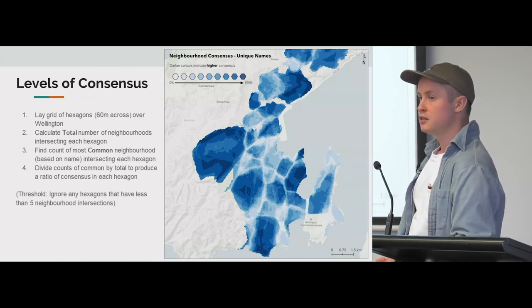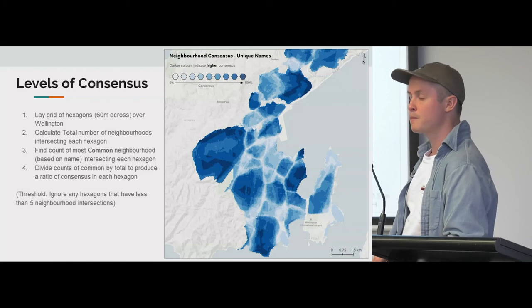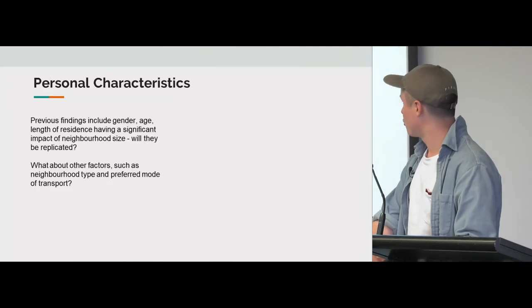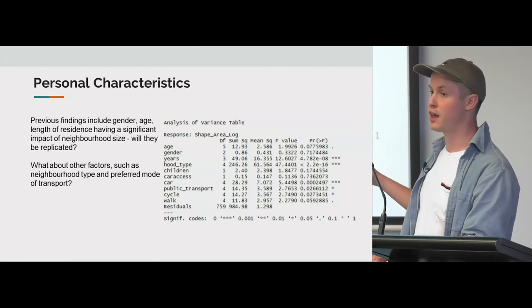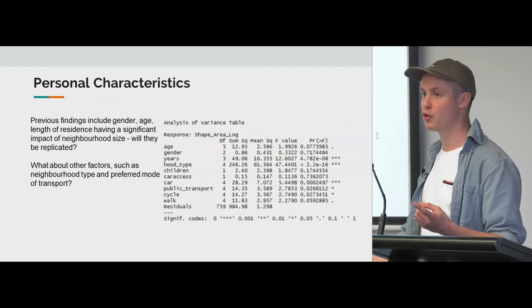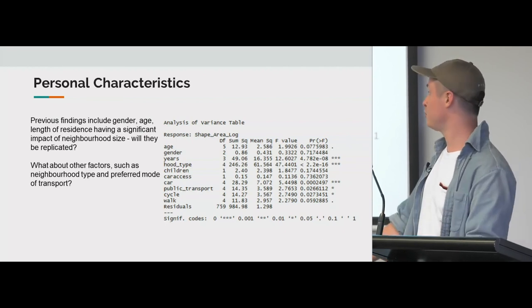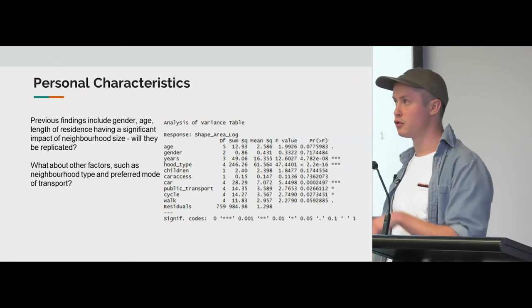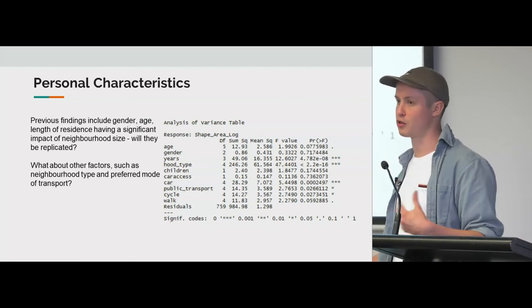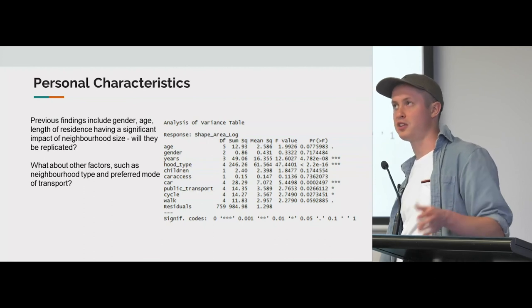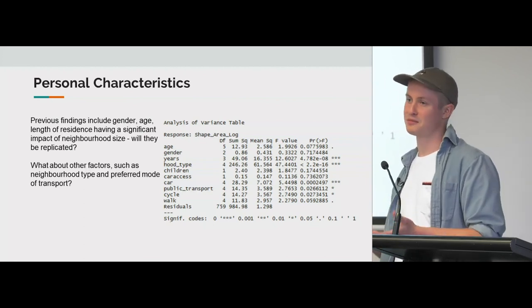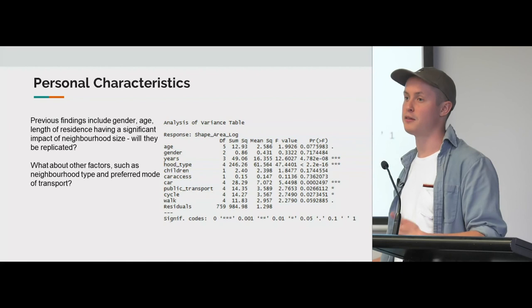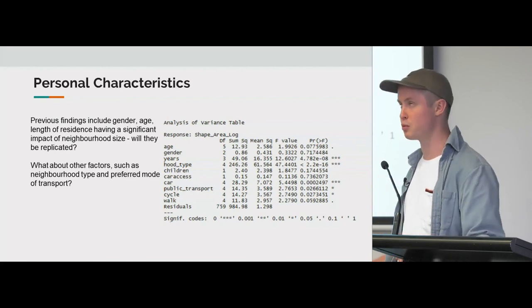Did you look at how many nodes people were placing to work out how much effort they were putting in, whether they were just roughly sketching it out? I've performed analysis on number of vertices, the length, and the complexity of the neighbourhood polygon. It was a lot less than the official boundaries in terms of vertices. But it was quite hard to tell because I didn't ask any questions on that. It would have been cool to capture if they filled out on a cell phone versus a desktop PC, or how long they spent filling it out.